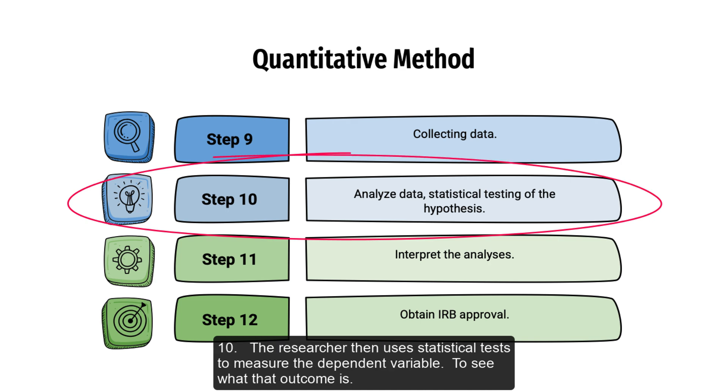Step 10: The researcher then uses the statistical tests that are available to measure the dependent variable to see what that outcome is.